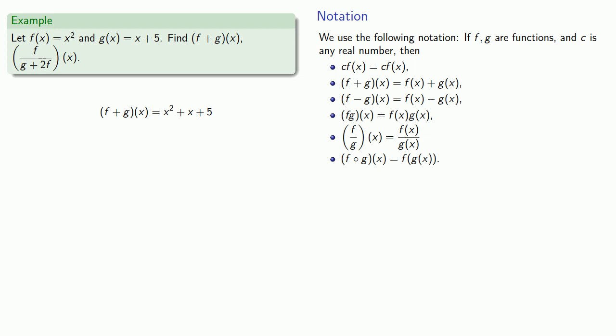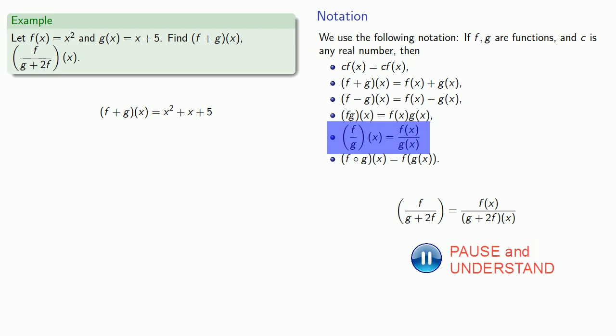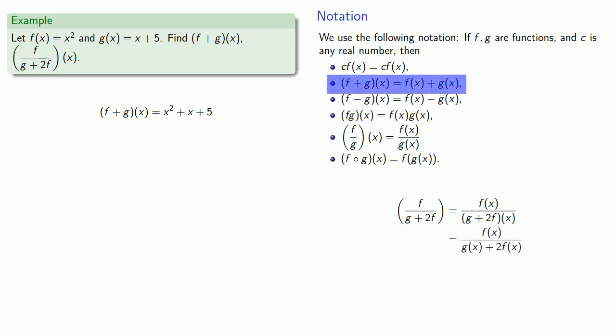So f over g plus 2f of x, that's a quotient of two functions, f of x and g plus 2f of x. g plus 2f of x is a sum, g of x plus 2f of x. Equals means replaceable. So every place I see f of x, I'll replace it with x squared. Every place I see g of x, I'll replace it with x plus 5.